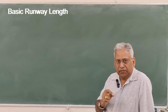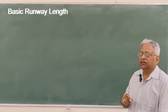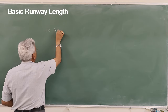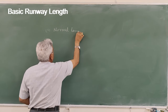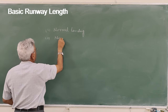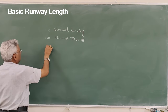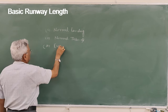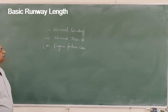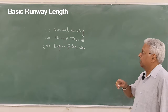Today we discuss what basic runway length is and how to estimate it. To estimate basic runway length for an airport or aircraft, three cases are considered: normal landing case, normal takeoff case (all-engine takeoff), and engine failure case. The case which gives the highest or maximum value of runway length required is considered.